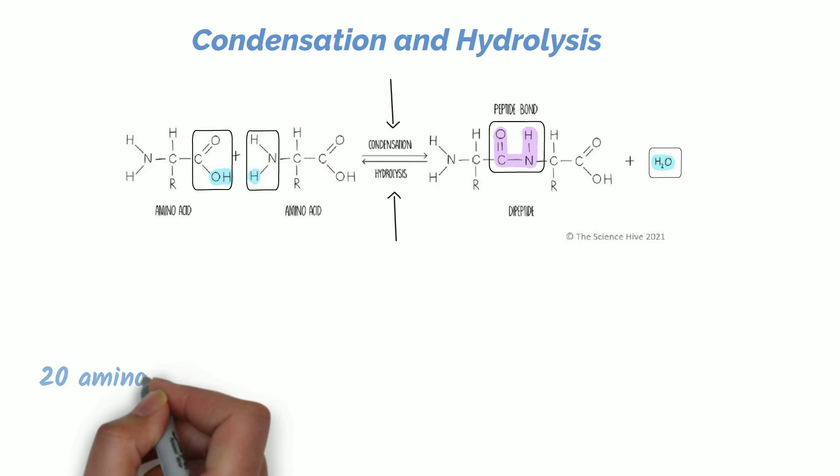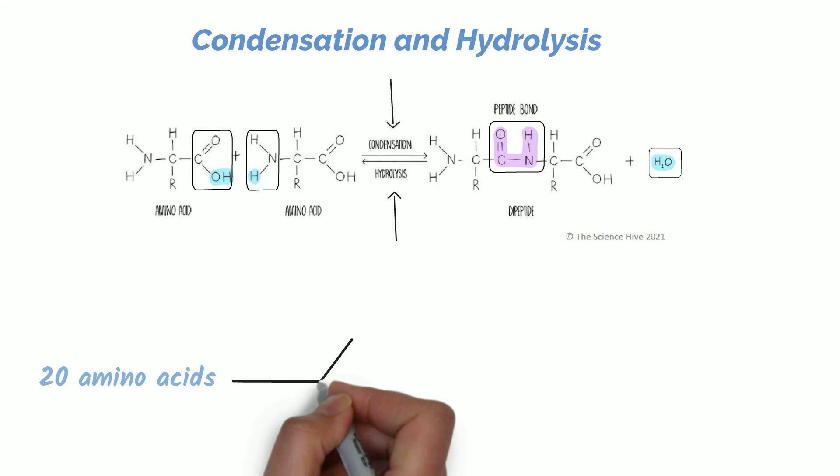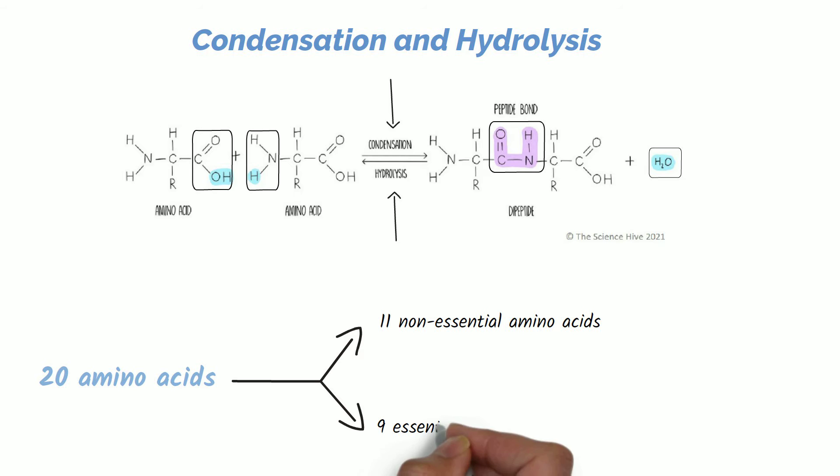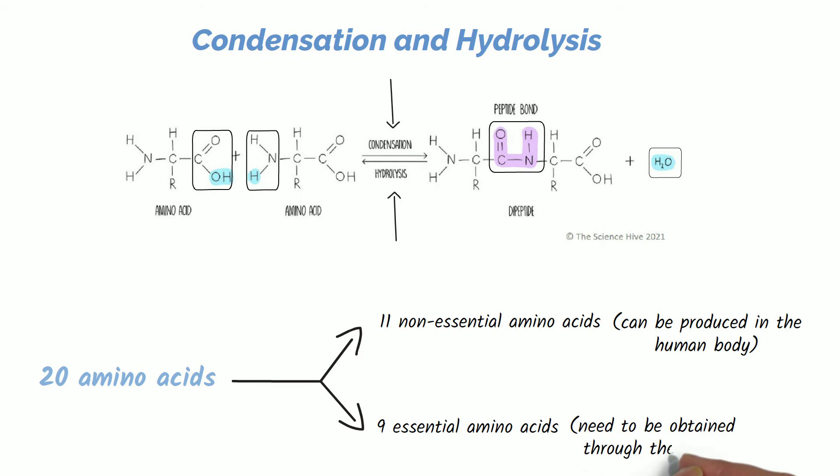There are 20 different amino acids found in nature. We have 11 non-essential and 9 essential amino acids. Non-essential amino acids can be produced in the human body and essential amino acids are not produced by the body and need to be obtained through our diet. The only difference between these are their R groups.